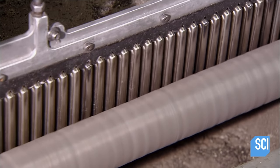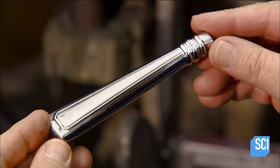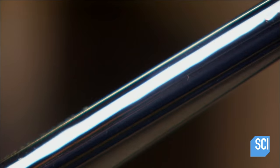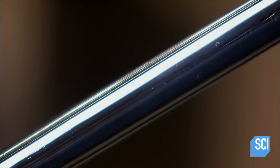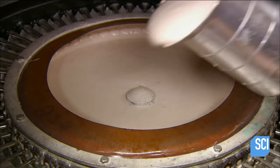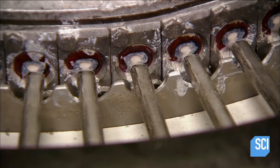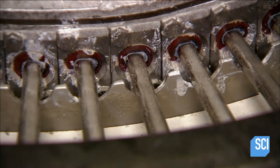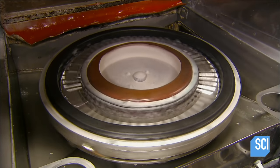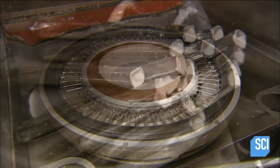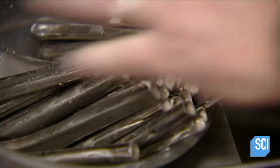Workers pour liquid cement into the center of a carousel on which they mount 50 handles at a time. As the carousel spins, the centrifugal force shoots the cement outward, filling the handle cavities.